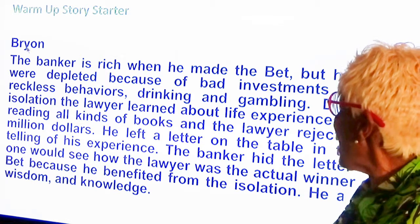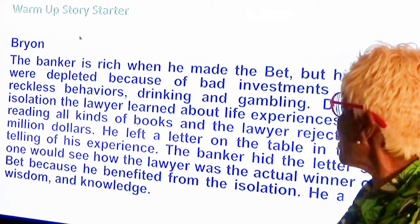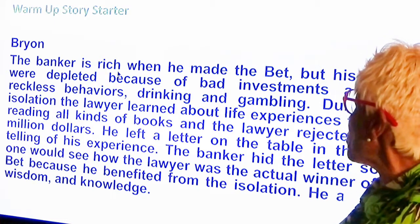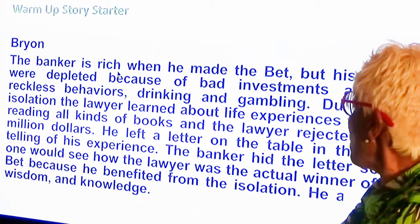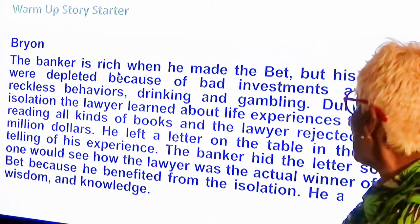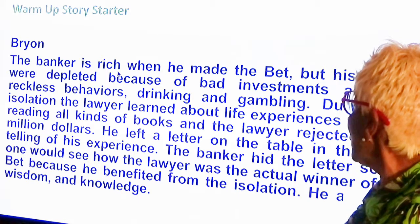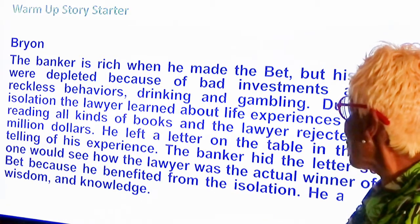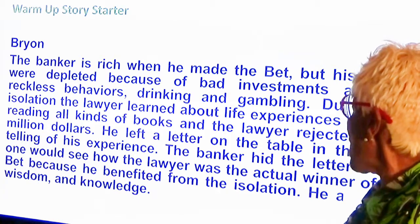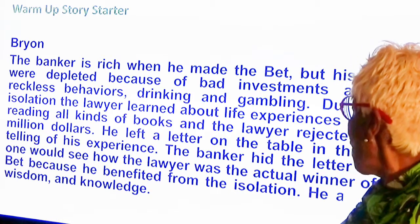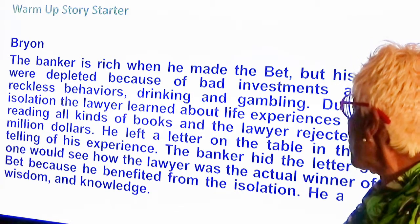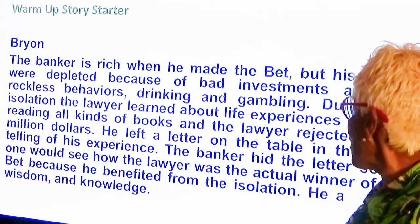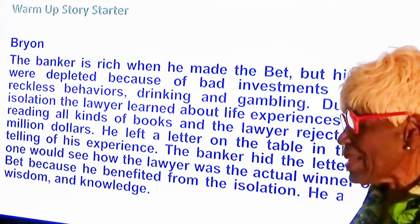Let's read what Brian had to say — his warm-up starter. 'The banker was rich when he made the bet, but his riches were depleted because of bad investments and his reckless behavior — drinking and gambling. During his isolation, the lawyer learned about life experiences through reading all kinds of things. The lawyer rejected the two million dollars and left a letter on the table in the shed telling of his experience. The banker hid the letter so no one would see how the lawyer was the actual winner of the bet, because he benefited from the isolation — it gave him wisdom and knowledge.' Great, Brian — good foresight, very good.